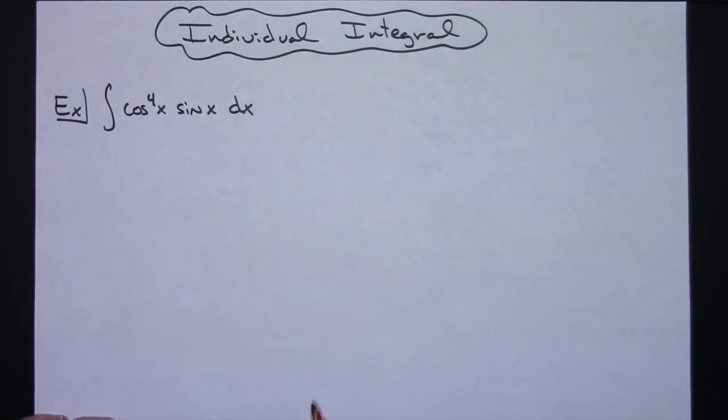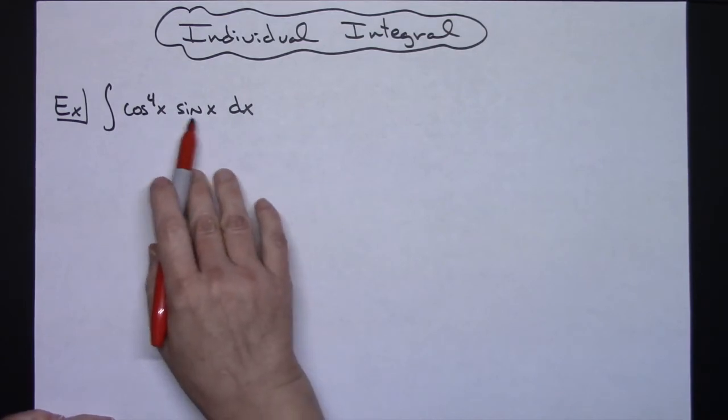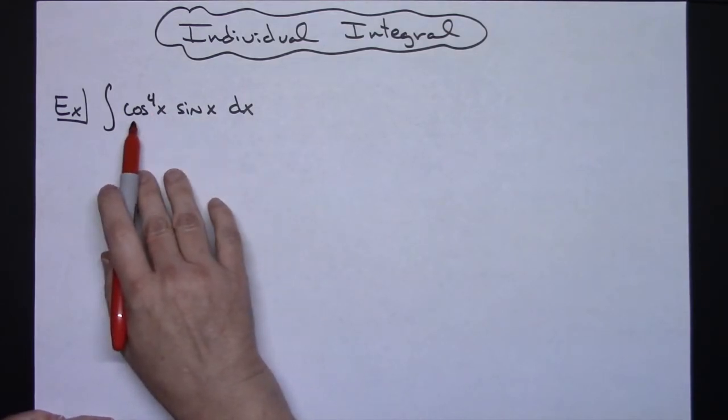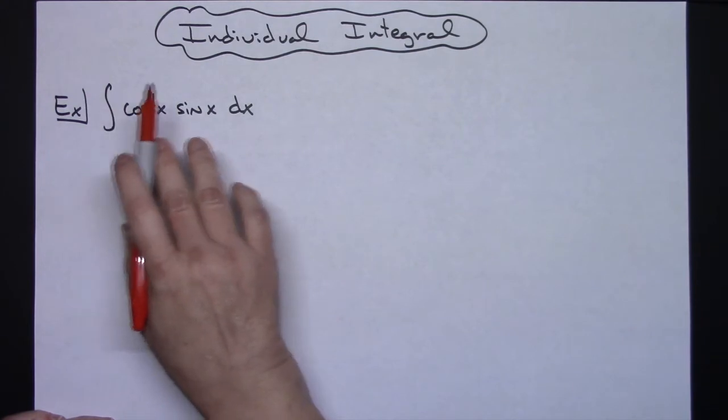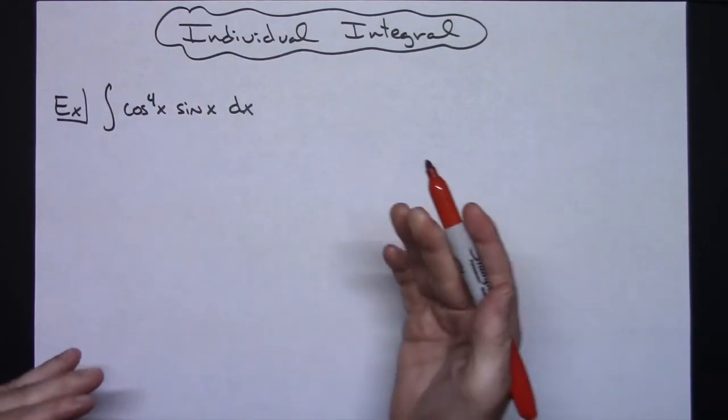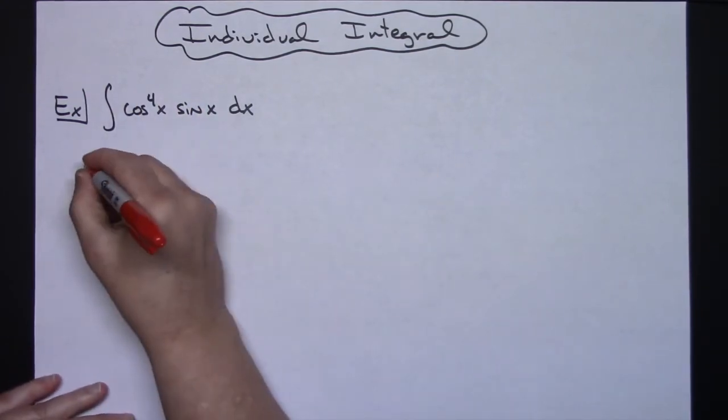This is going to be a straightforward u substitution, because as you can see we could let u be cosine x and that derivative there will then be negative sine x. So it will be a straightforward u substitution.